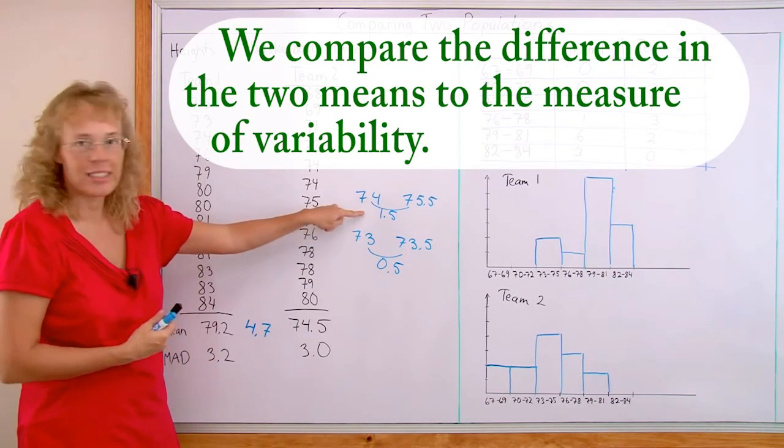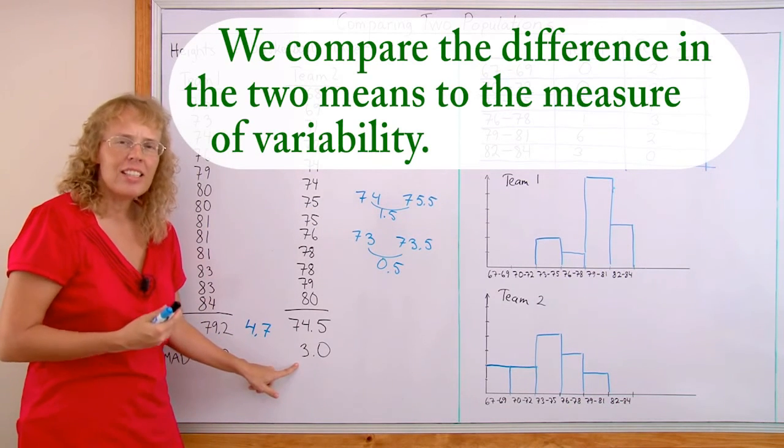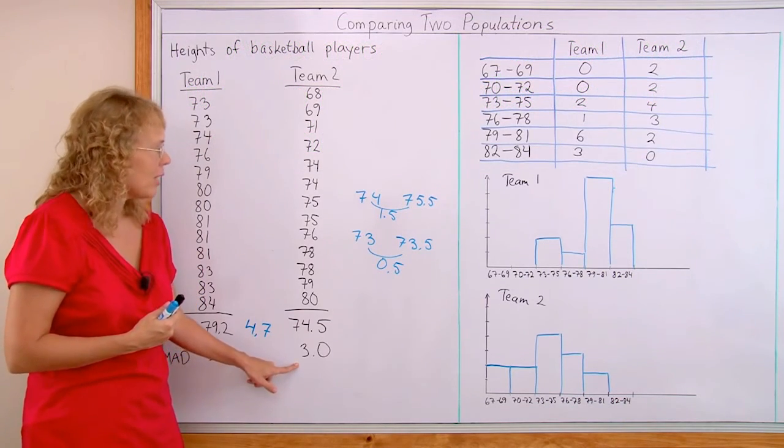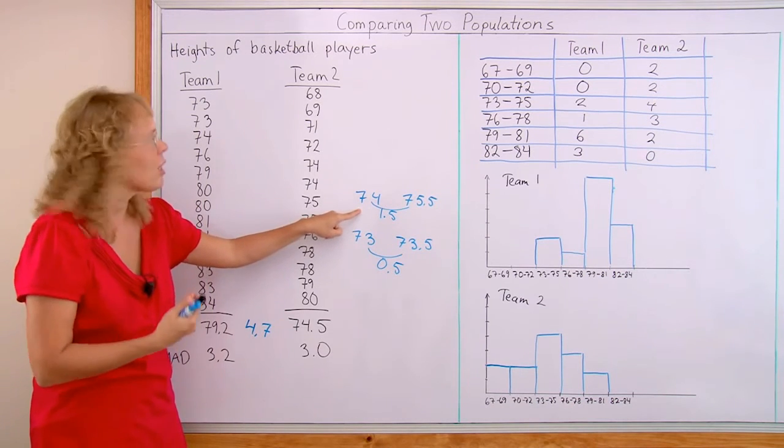And we compare how many times is this number the measure of variability. For example here, this is exactly half the measure of variability. And that, that constitutes a medium significance, okay? So there is a significant difference here of medium size.